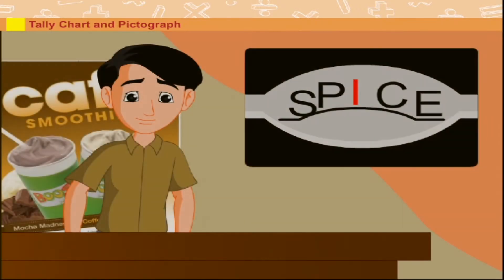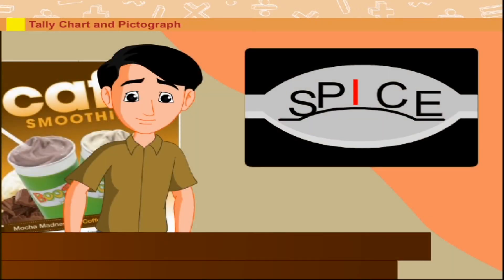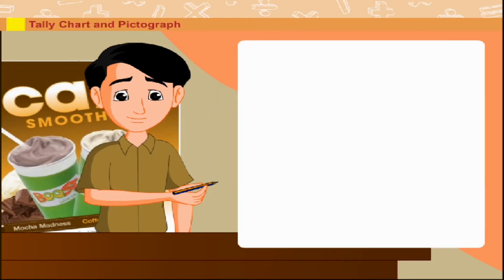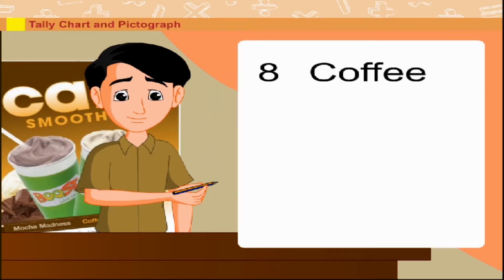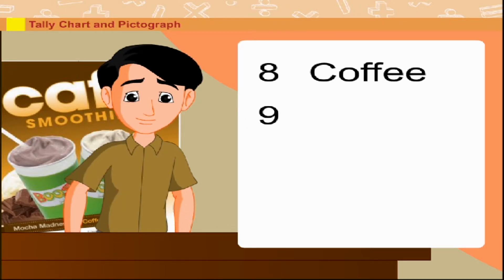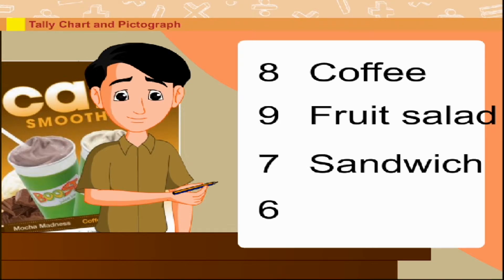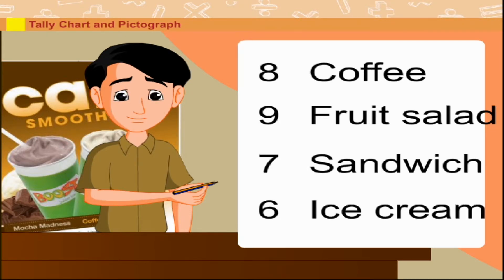On a particular day, Sarket served 30 customers. 8 people took coffee, 9 customers took fruit salad, 7 ate sandwich, and 6 people enjoyed ice cream.